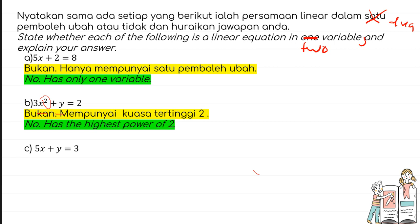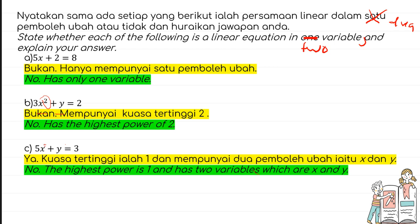The third one: 5x + y = 3. It is a linear equation because both x and y have a highest power of one, and it has two variables. So the answer is yes — the highest power is one and there are two variables, x and y.